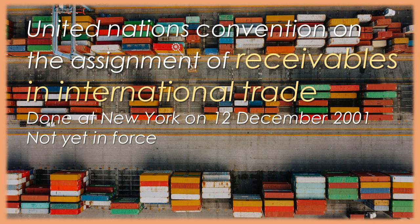Article 27. Form of a Contract of Assignment. 1. A Contract of Assignment concluded between persons who are located in the same state is formally valid as between them if it satisfies the requirements of either the law which governs it or the law of the state in which it is concluded. 2. A Contract of Assignment concluded between persons who are located in different states is formally valid as between them if it satisfies the requirements of either the law which governs it or the law of one of those states. Article 28. Law applicable to the mutual rights and obligations of the assigner and the assignee. 1. The mutual rights and obligations of the assigner and the assignee arising from their agreement are governed by the law of the state with which the contract of assignment is most closely connected.